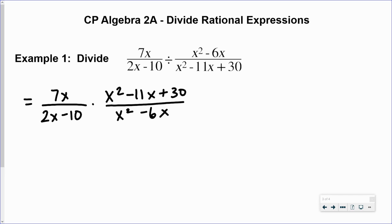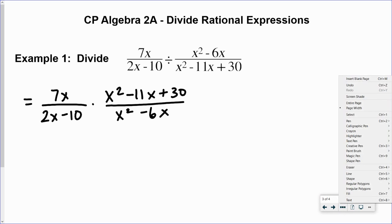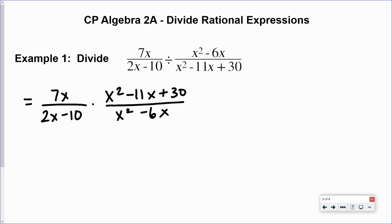Now what we're going to do is approach this just like we approached the multiplication problems from the previous lessons. We're going to try to factor the numerators and denominators of each rational expression and then multiply and see if we can simplify out any common factors.